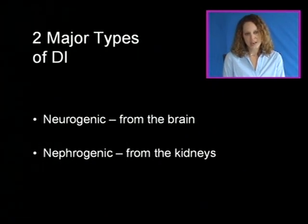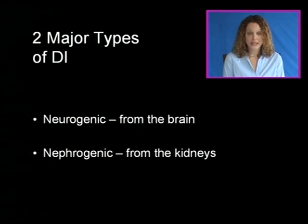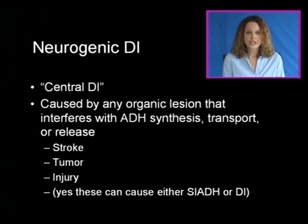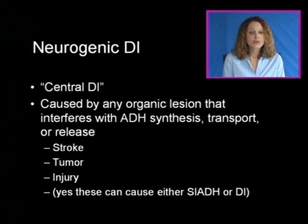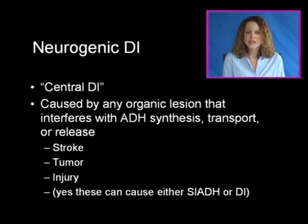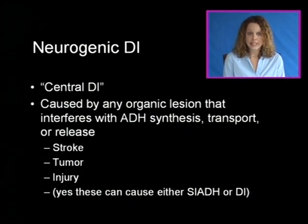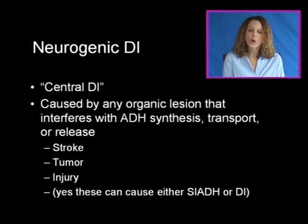The two major types of diabetes insipidus are neurogenic, meaning from the brain, and nephrogenic, meaning from the kidneys. In neurogenic DI, also referred to as central DI, this can be caused by any organic lesion that interferes with ADH synthesis, transport, or release. Common causes include stroke, a tumor, or traumatic brain injury — and these can cause either SIADH or DI.